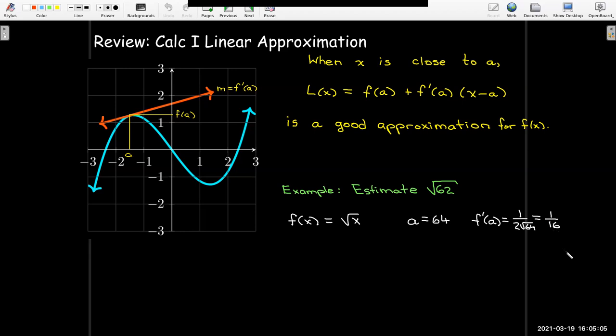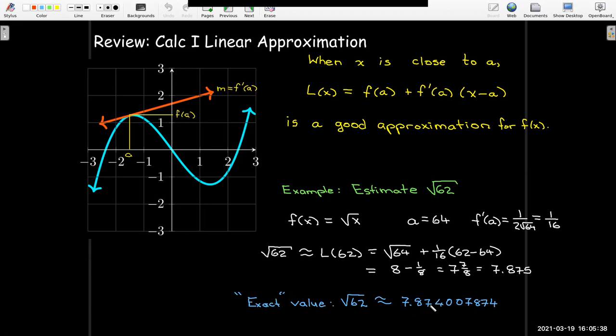So then I use my linear approximation to approximate the value of √62, work out some of the arithmetic there, and I get an approximation of 7.875. Now I can't write down the exact value of √62 as a decimal because it's an irrational number, but using my calculator, I get 7.874007874. So I get a very good approximation from my equation of the tangent line.